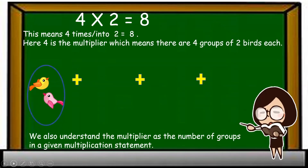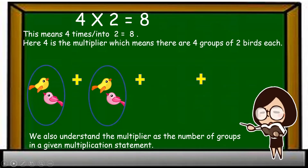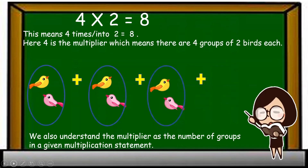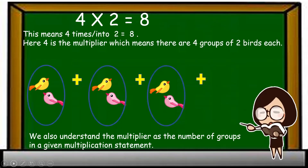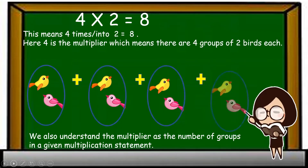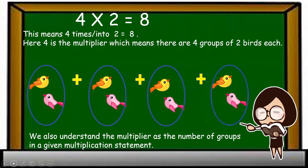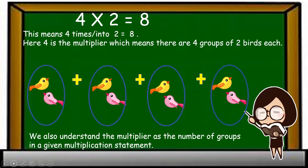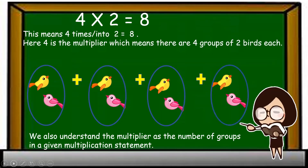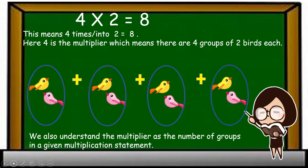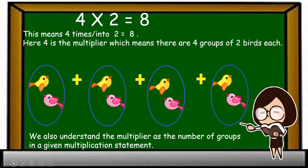One group of two birds, two groups of two birds, three groups of two birds, and four groups of two birds each make eight birds in all. Here, the number of groups represents the number of times we add the birds.